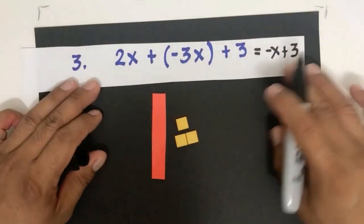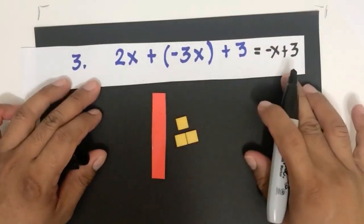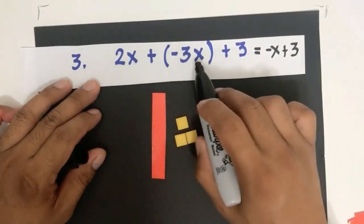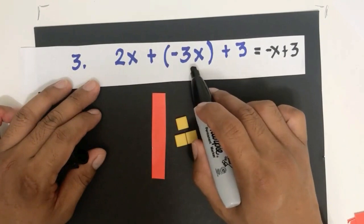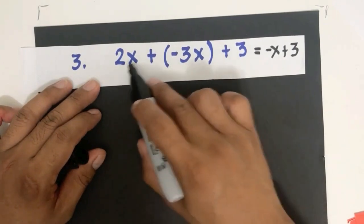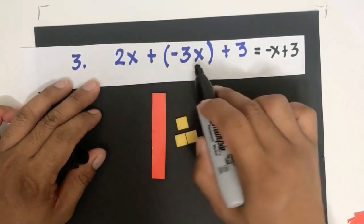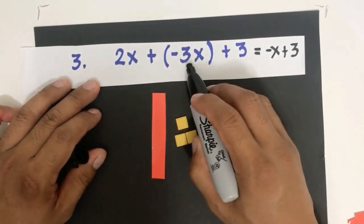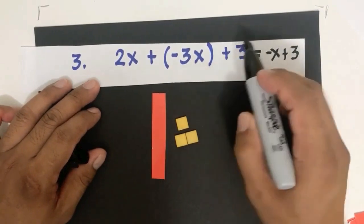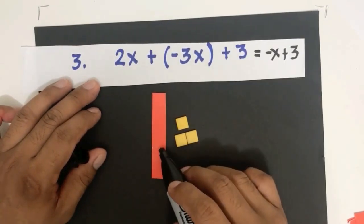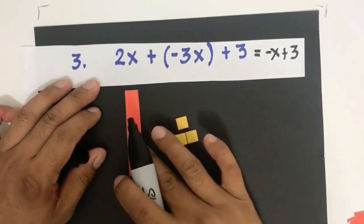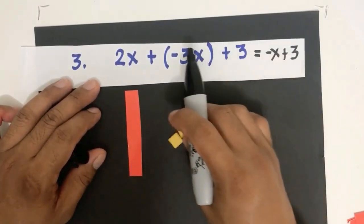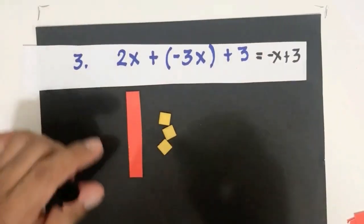Observing the pattern: 2x and negative 3x combined — we remove two zero pairs, leaving 1 negative x. That's the negative x. And then the 3 is just copied.